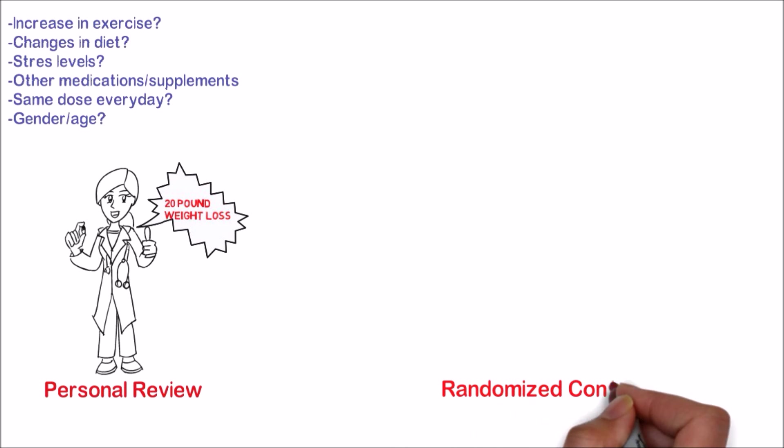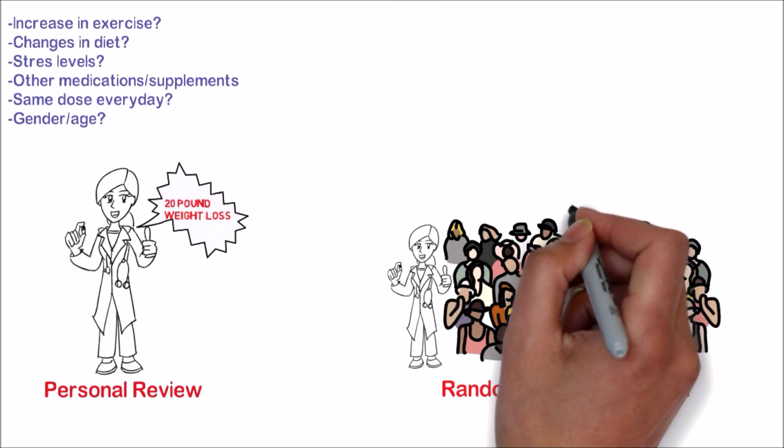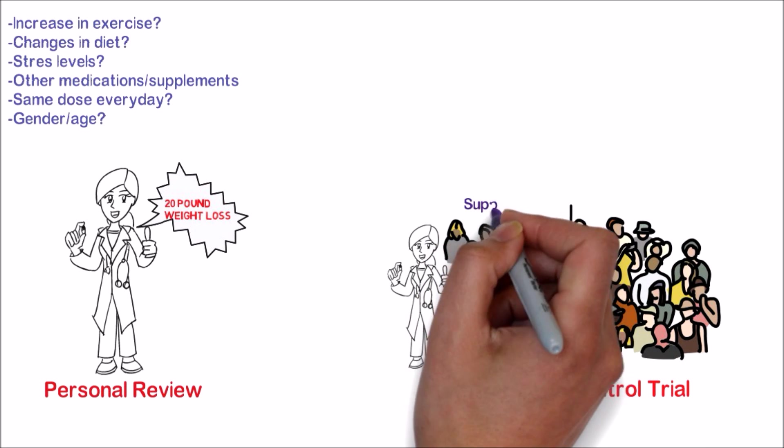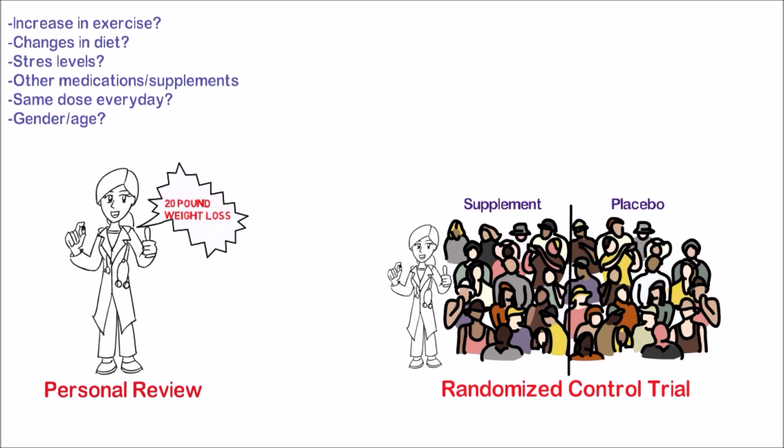Let's compare this to a randomized control trial. In this study we are not looking at just one person but rather a whole group of people. The group is divided so that half actually receives the treatment and the other half thinks they are receiving the treatment but they really get a sugar pill. This is known as a placebo.